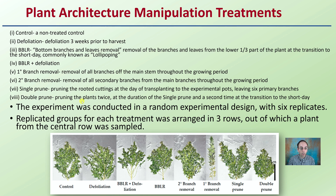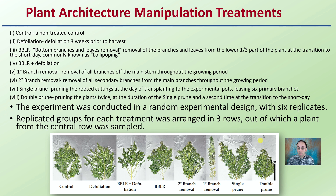The double prune involves pruning the plants twice — at the duration of the single prune, and a second time at the transition to the short day or flowering treatments. As a reminder, this experiment was conducted in a randomized experimental design with six replicates. Replicated groups for each treatment were arranged in three rows, out of which a plant from the center row was then sampled. This gives you an idea of their general structure based on the different plant architecture manipulation treatments.